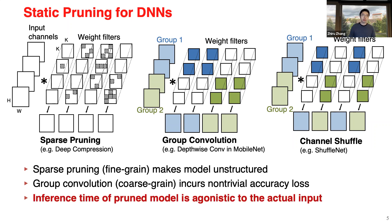There are some mitigations — for example, shuffling the groups before connecting to the next layer. This technique is used in ShuffleNet and helps facilitate information exchange across groups to regain some accuracy. But in general, you may still lose some accuracy with this coarse-grained structured compression. Whether we're doing unstructured fine-grained pruning or more structured group convolution, all of this happens before inference time. The pruned model, regardless of the input image, will take the same time at inference — it remains constant, whether dealing with easy or difficult images. That's what we call static pruning.